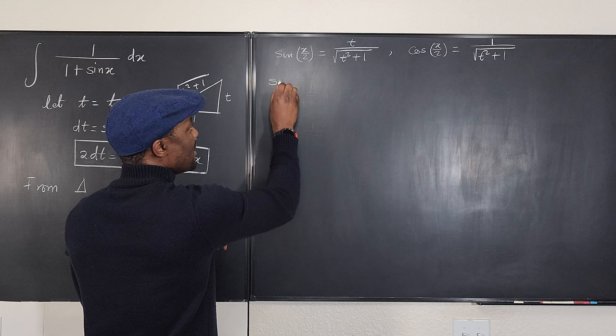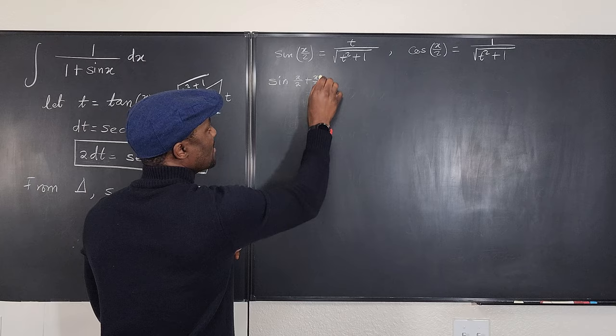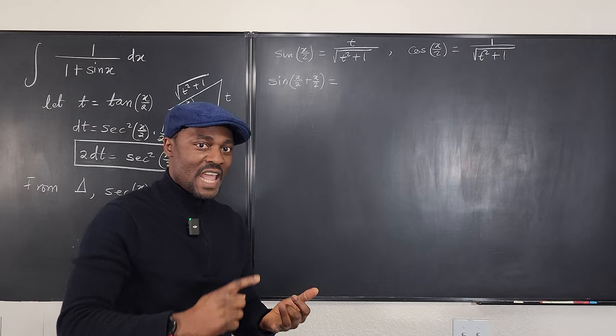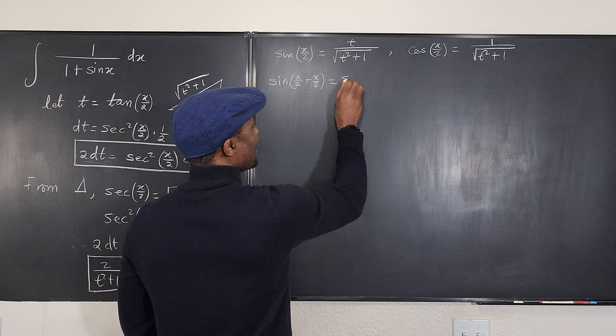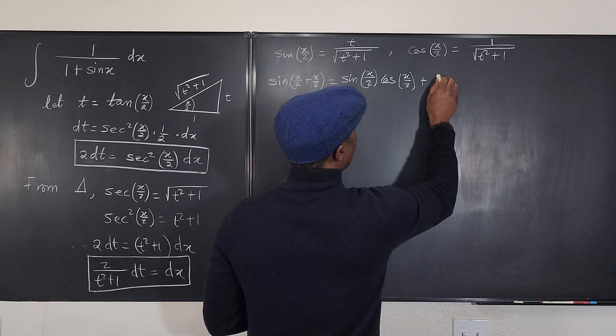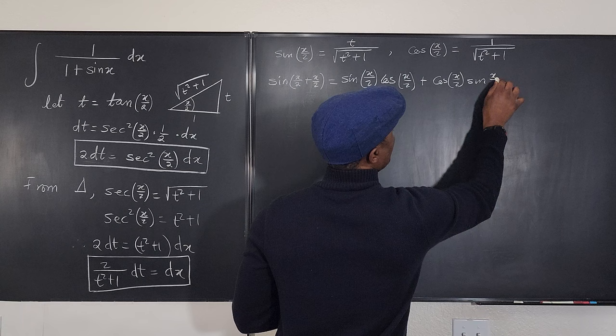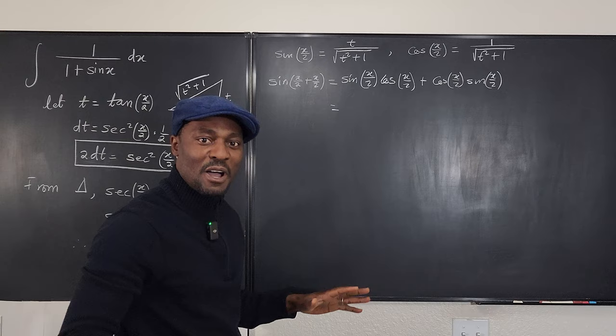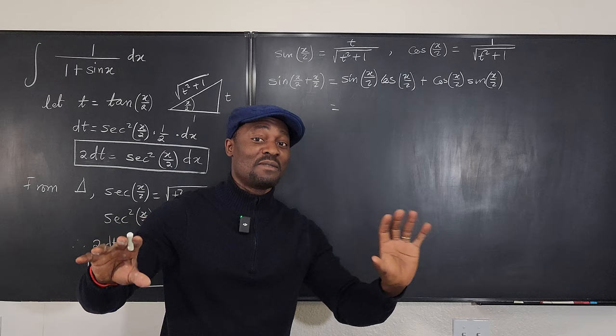To find sine x, write it as sine of (x/2 + x/2) and use the addition identity: sine x equals sine(x/2)cos(x/2) plus cos(x/2)sine(x/2). This is the double angle identity: sine x equals 2 sine(x/2) cos(x/2). After working through, you can see both terms are identical.